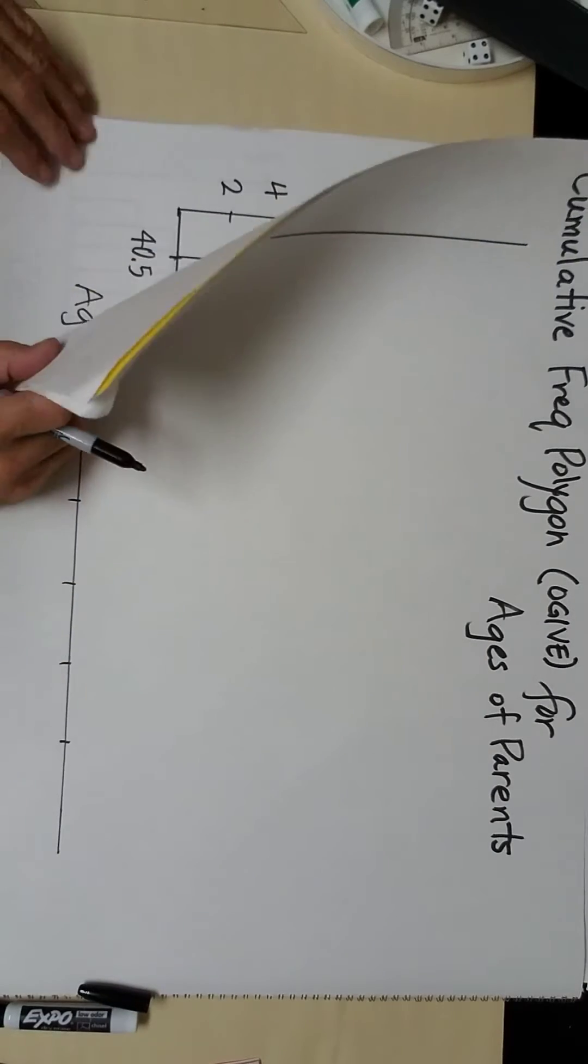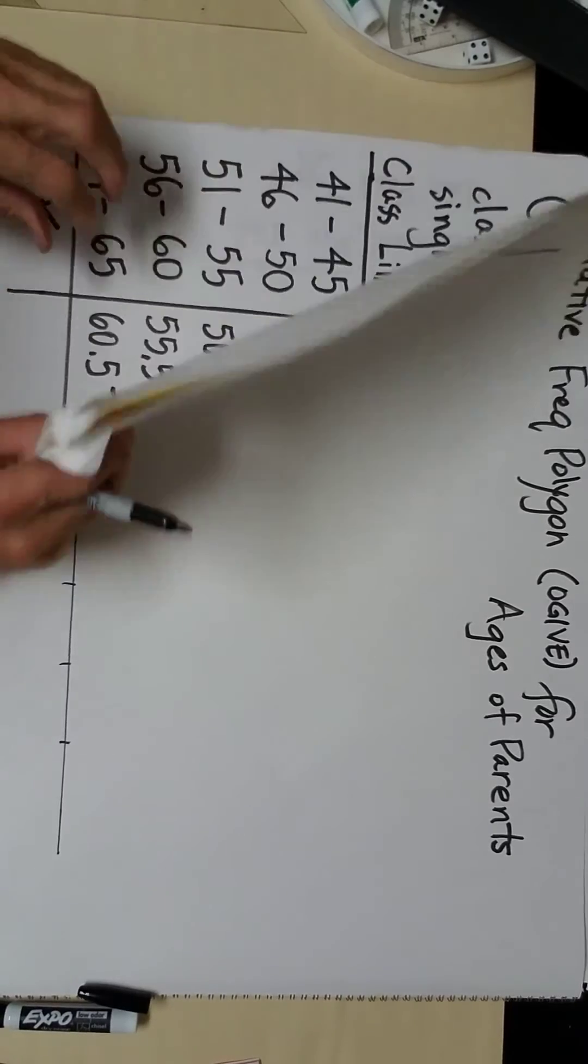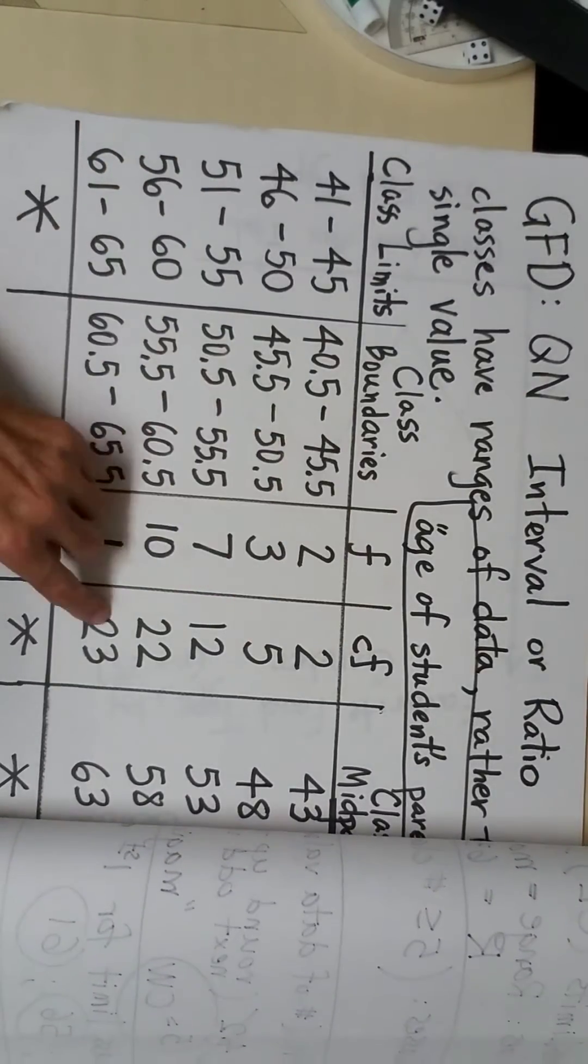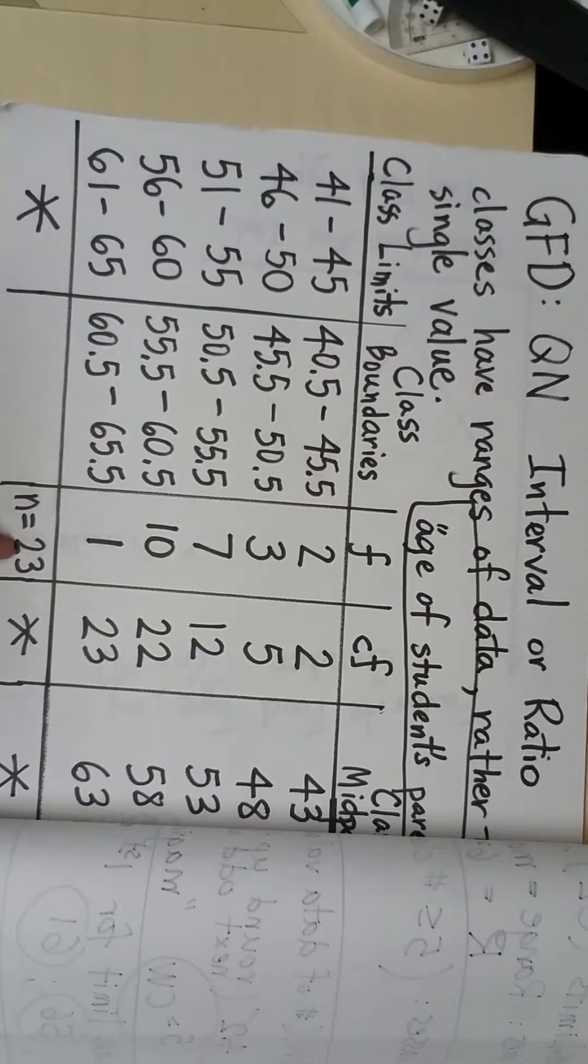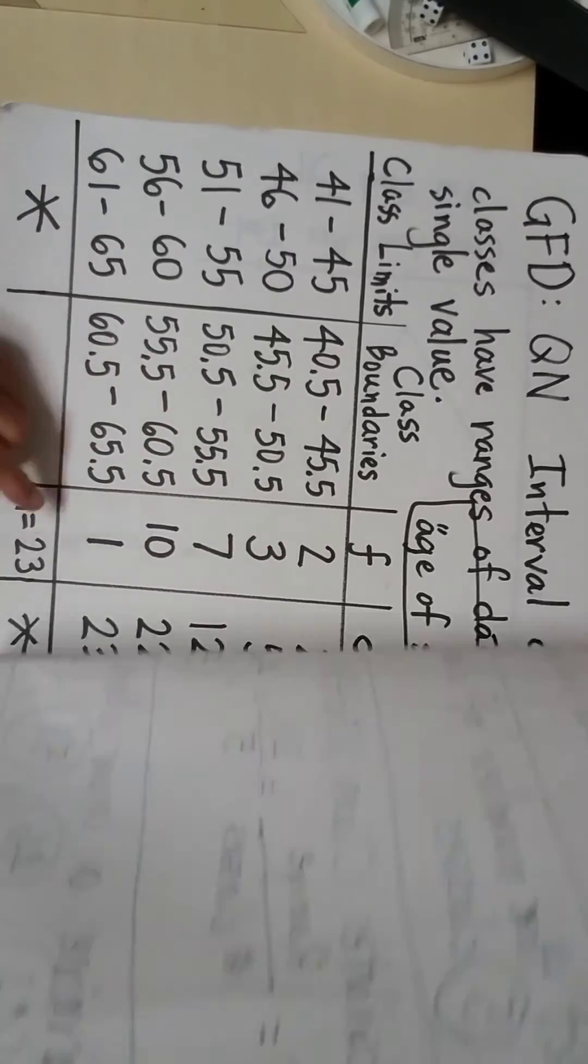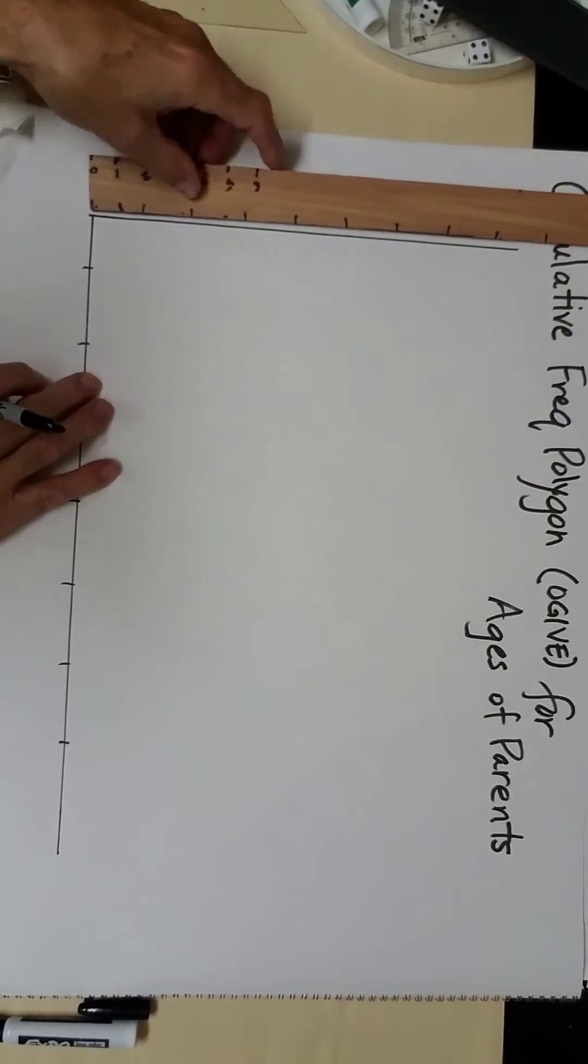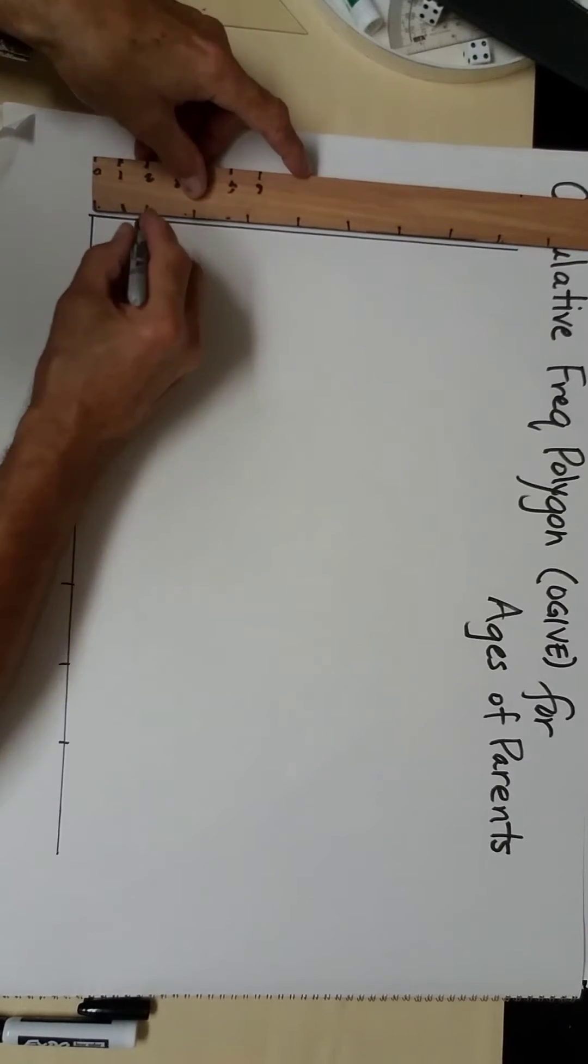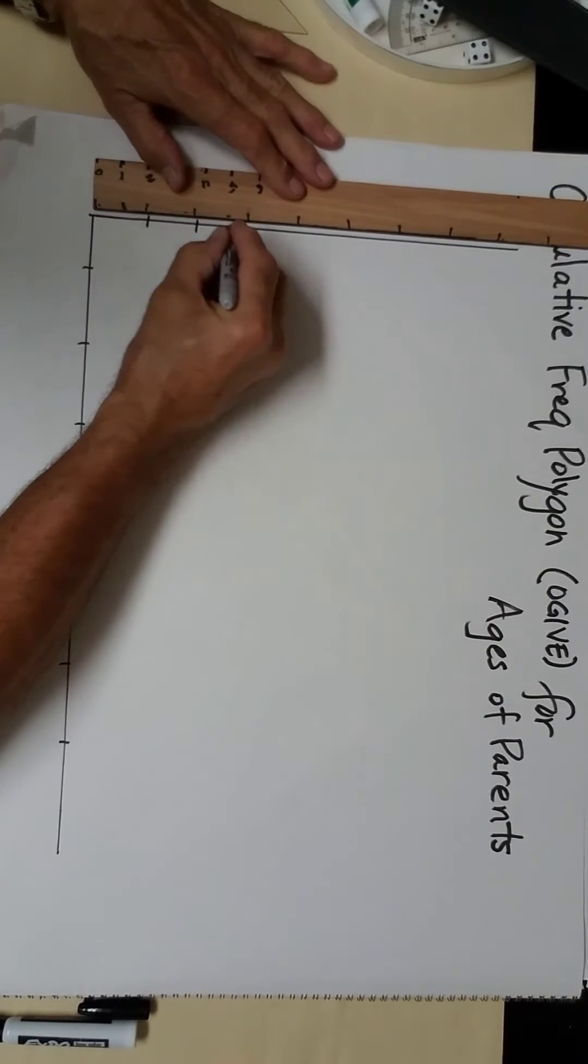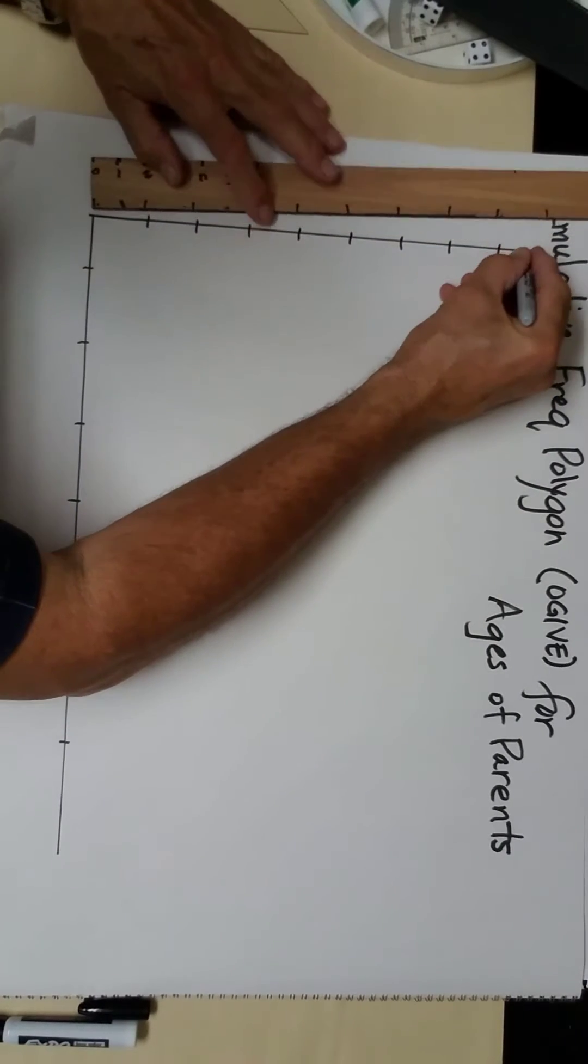Now, in this problem, we have to focus on the cumulative frequency. Cumulative frequency, the total value here was 23. So my vertical scale has to go to 23, not 10 or some other number. So my vertical scale, perhaps I can count by threes: 3, 6, 9, 12, 15, 18, 21, 24.